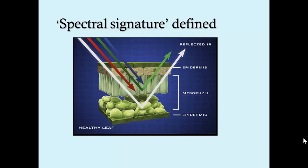If we consider the nature of vegetation, a healthy leaf is going to absorb most of the red and blue portions of the visible light spectrum, shown here in red and blue arrows, as that is where photosynthesis primarily occurs.